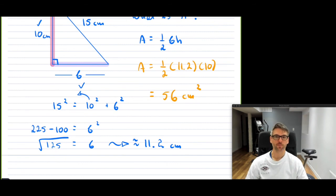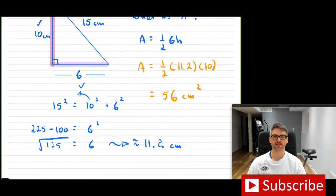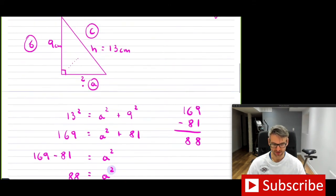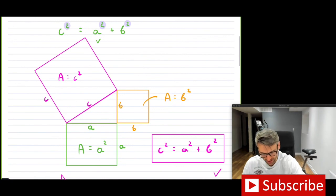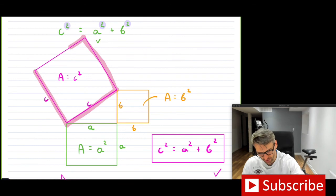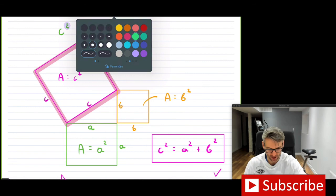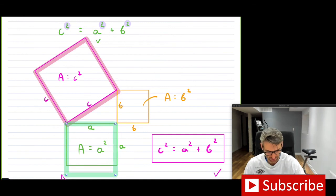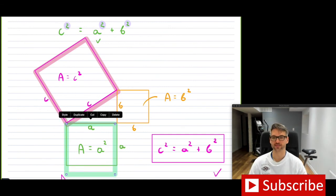So I'll stop it there. You can certainly use this for many other examples, but the hope is that you get familiar with the Pythagorean theorem and realize that it actually came from noticing a pattern between the areas of the squares attached to the sides of right-angle triangles. Thanks for watching — we'll see you in a future video.